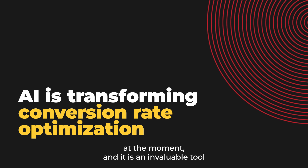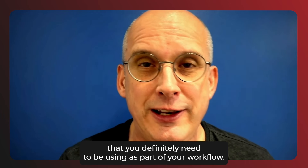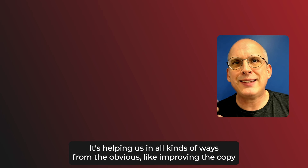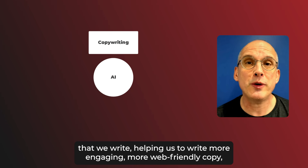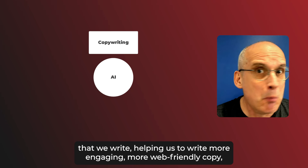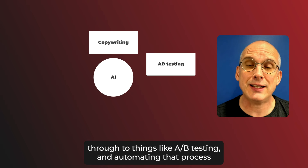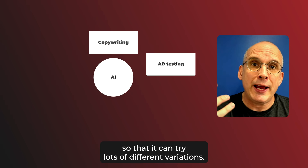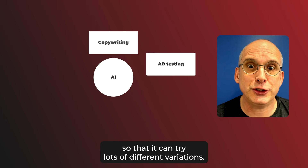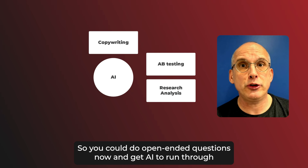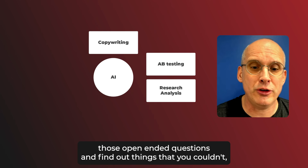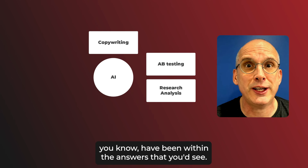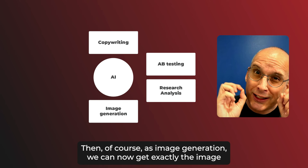AI is an invaluable tool that you definitely need to be using as part of your workflow. It's helping us in all kinds of ways — from the really obvious, like improving the copy that we write and helping us to write more engaging, more web-friendly copy, through to things like A/B testing and automating that process so it can try lots of different variations. Then there's research analysis, so you can do open-ended questions and get AI to run through all those answers and find themes within them.